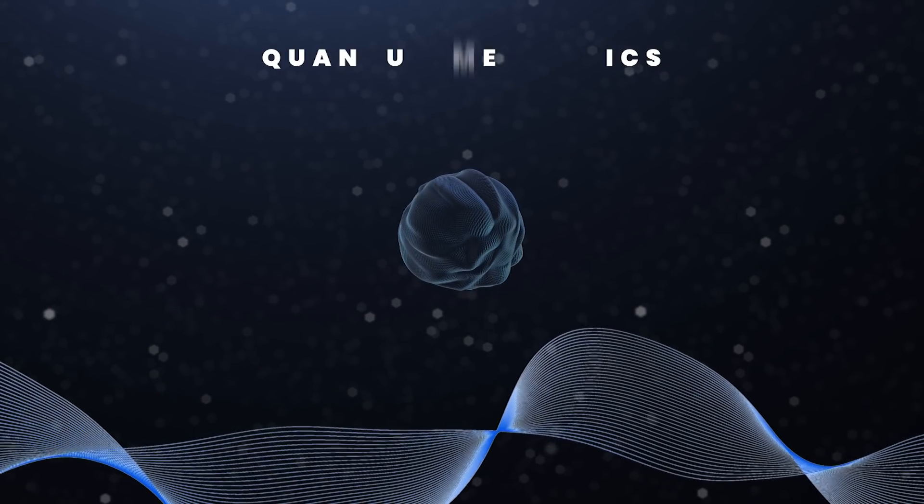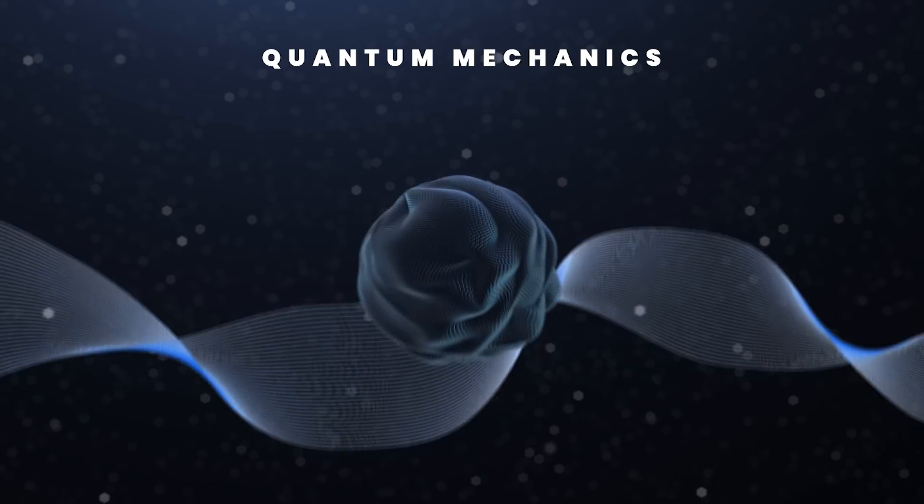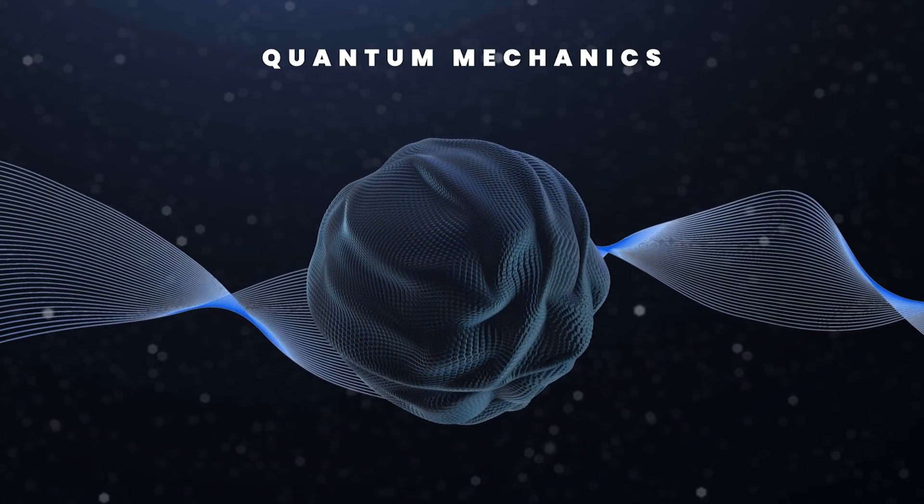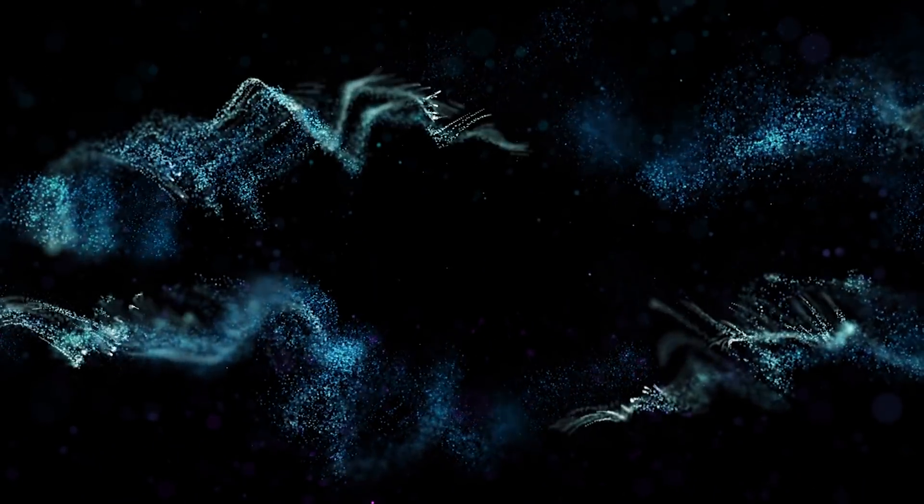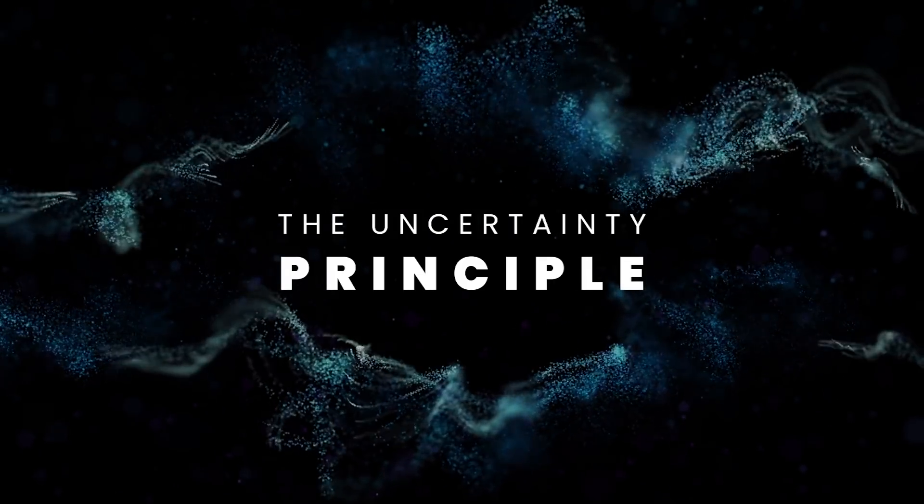In classical physics, something can behave either as a particle or a wave. In quantum mechanics, though, particles are a strange combination of both, and their exact position or speed cannot be predicted with precision. This is called the uncertainty principle.